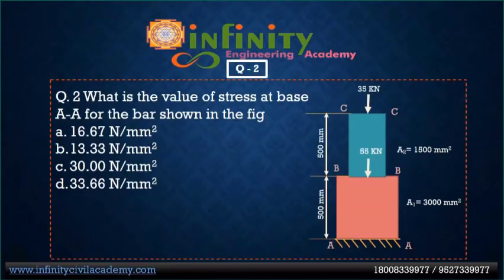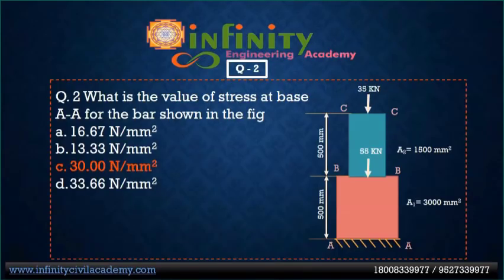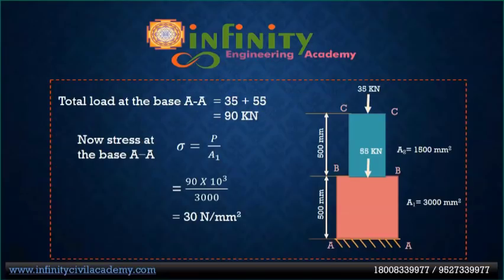Question 2: What is the value of stress at base AA for the bar shown in the figure? Option A: 16.67, option B: 13.33, option C: 30, option D: 33.66 Newton per mm². Option C is correct — 30 Newton per mm².